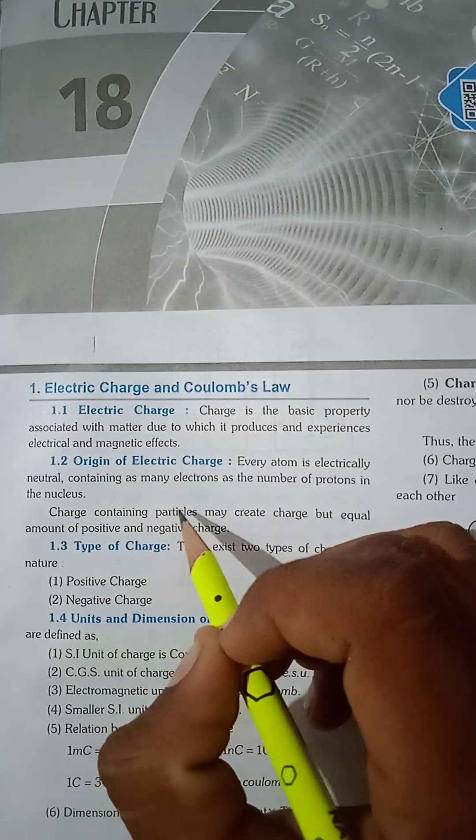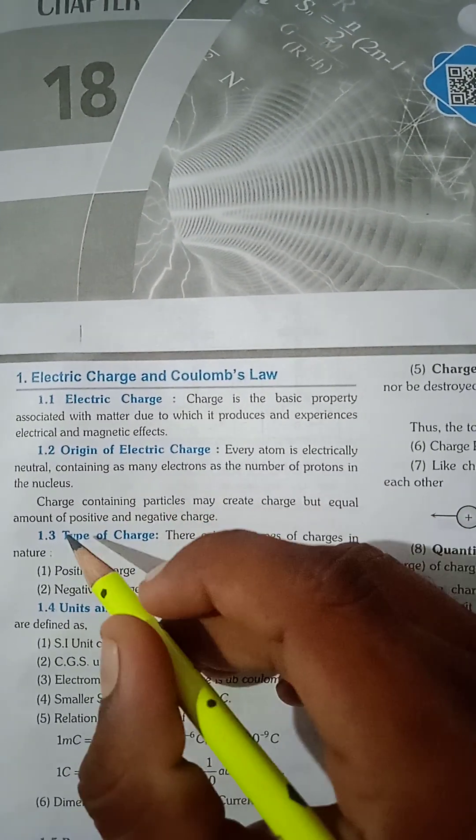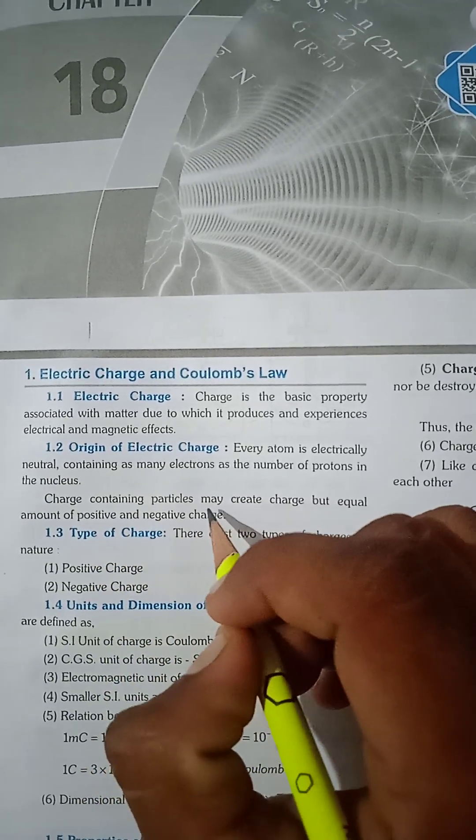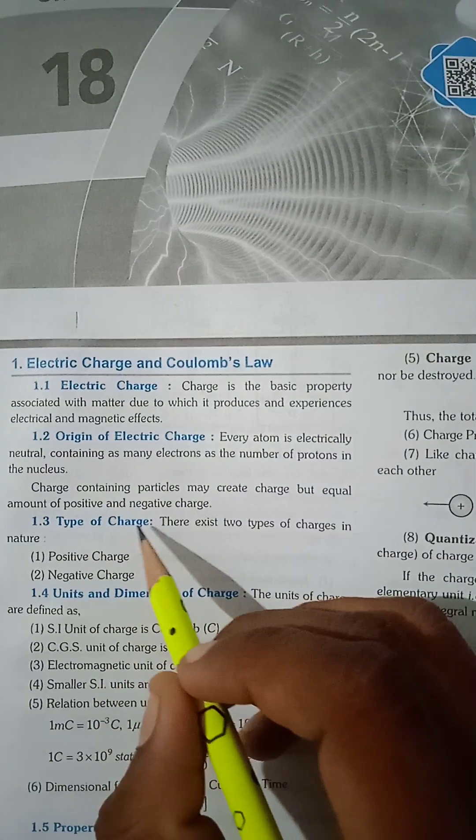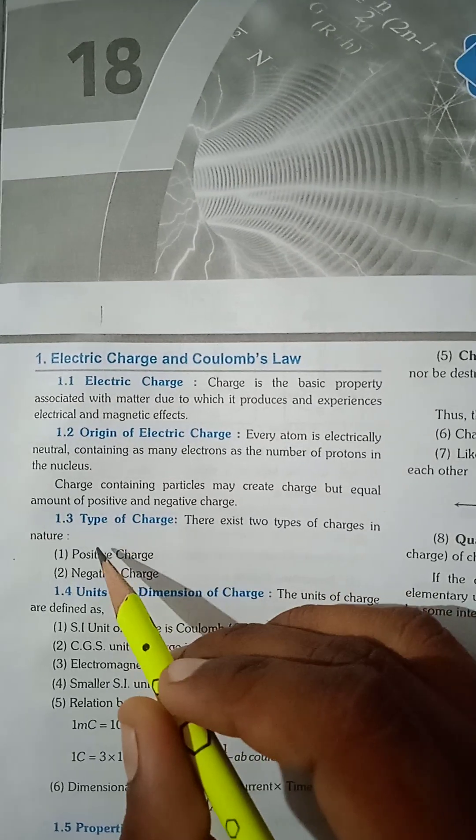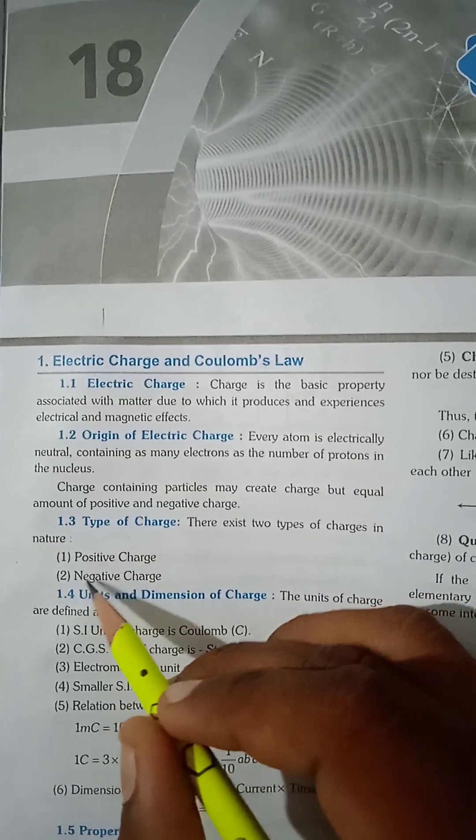Charge-containing particles may create charge, but equal amounts of positive and negative charge. Types of Charge: There exist two types of charge in nature - first positive charge, second negative charge.